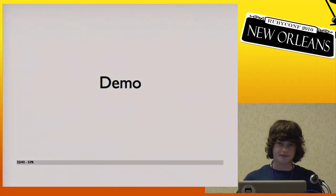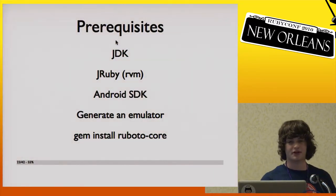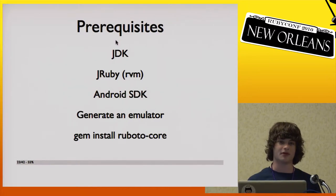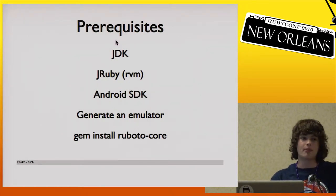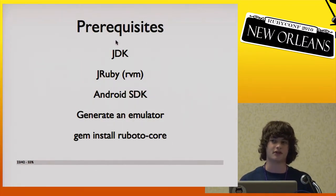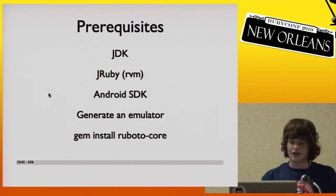The first demo: I'll show how you create a starter app. Before you make one, you need the JDK obviously, JRuby — one good way to install that is RVM, which also makes it easy to switch between JRuby and Ruby and between versions — the Android SDK, and you probably want to generate an emulator. You can develop straight on your phone, but an emulator lets you blow it away if needed and gives you root access. Then you just gem install ruboto.